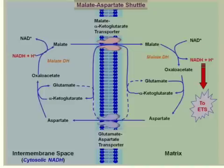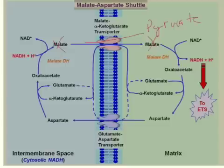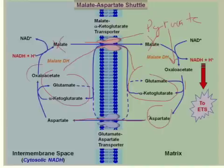Notably, this is the same exact shuttle used for gluconeogenesis, only running in reverse. Instead of oxaloacetate being transferred out, you're transferring NADH in. In gluconeogenesis, pyruvate enters the matrix and through pyruvate carboxylase becomes oxaloacetate. To get the oxaloacetate out, it's converted to aspartate, moved out through the aspartate transporter, while glutamate and alpha-ketoglutarate recycle in and out, and the oxaloacetate is transferred up through gluconeogenesis.